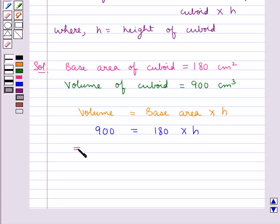This implies height h is equal to 900 divided by 180. Now this zero gets cancelled with this zero and 18, 5 times is 90 so we have h equals 5.